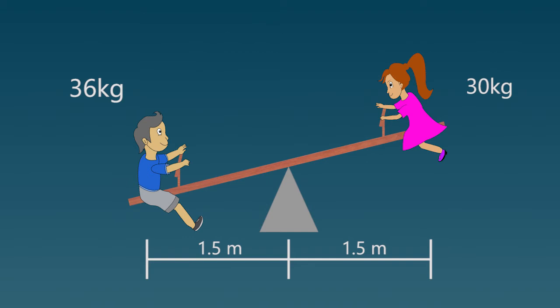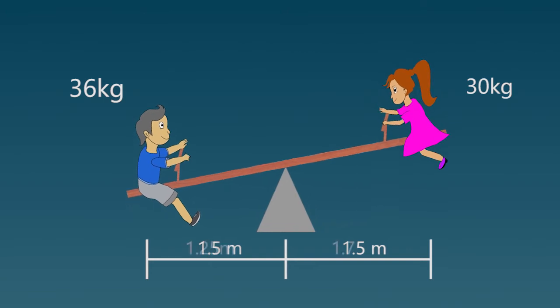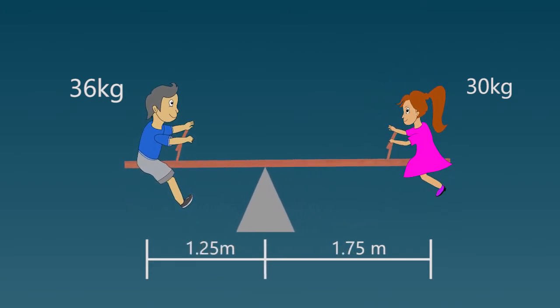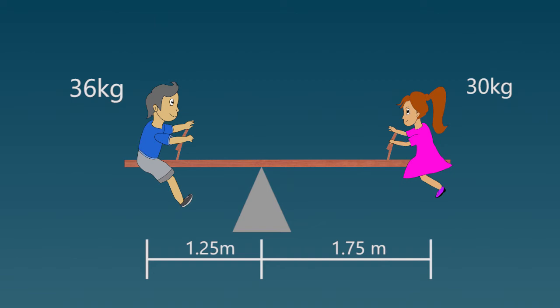It can also be proved that the bar will be balanced with different masses if the heavier mass is lying closer to the center than the lighter one. That's because the heavier mass has lesser moment arm than the lighter one.